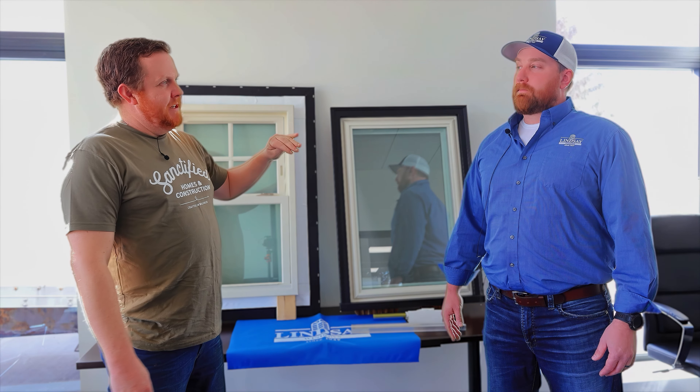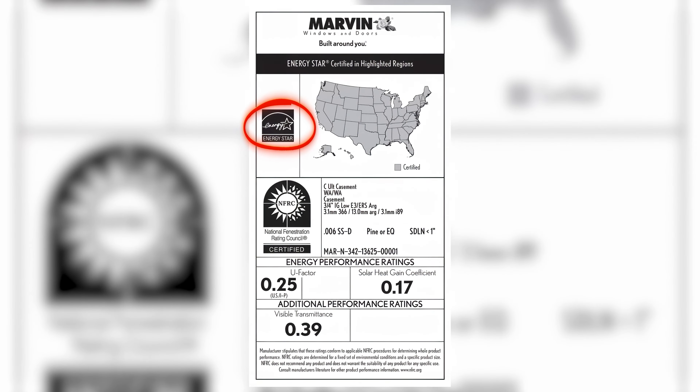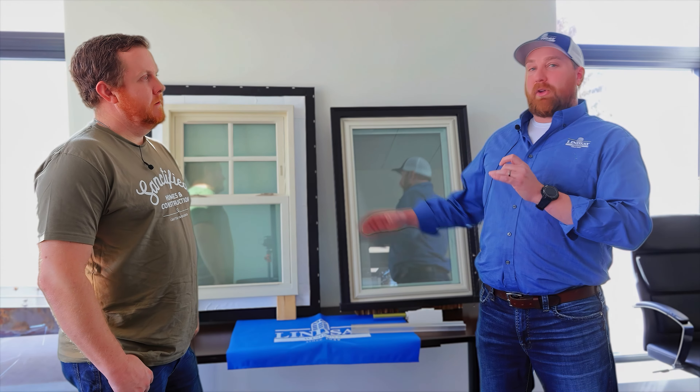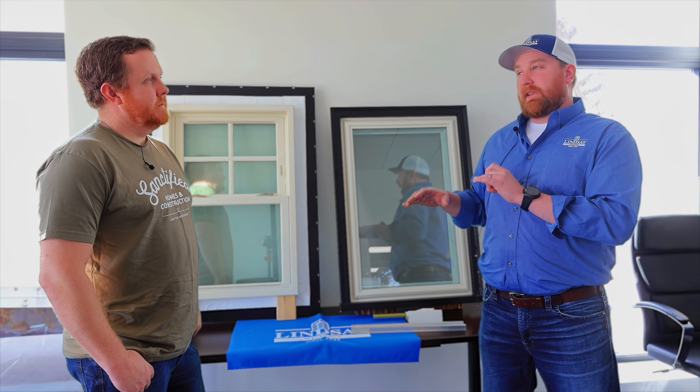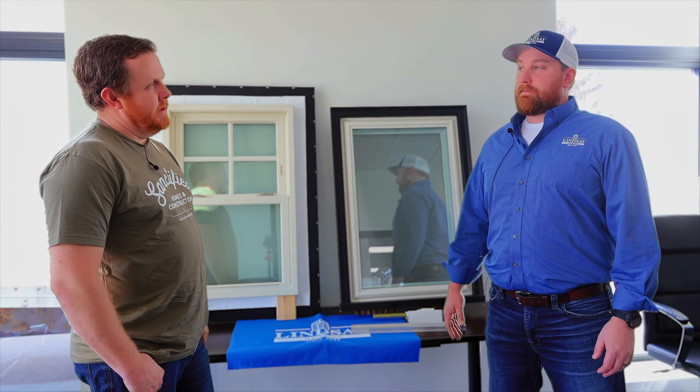When you're in a big box store and see windows labeled Energy Star, look closely at the NFRC label. The Energy Star symbol might be on every NFRC label simply because somewhere in that window company's lineup they have an Energy Star window — it doesn't necessarily mean the one you're looking at is Energy Star. You need to know the numbers required for your zone and check whether that specific window actually hits those numbers.